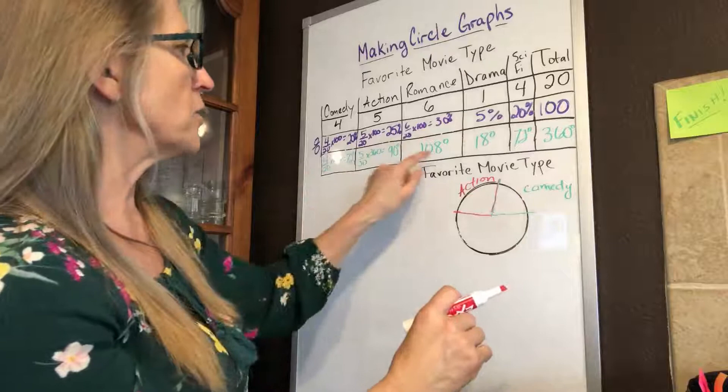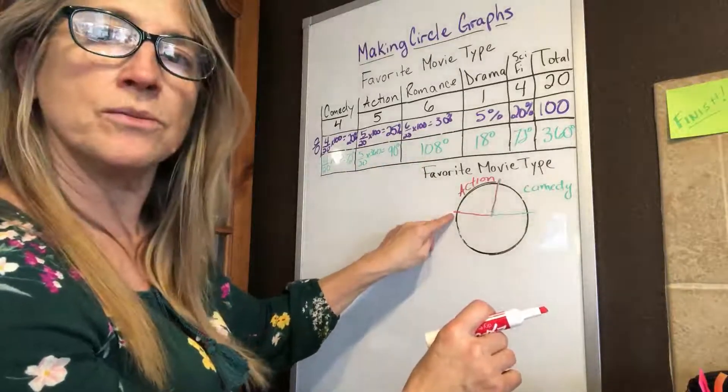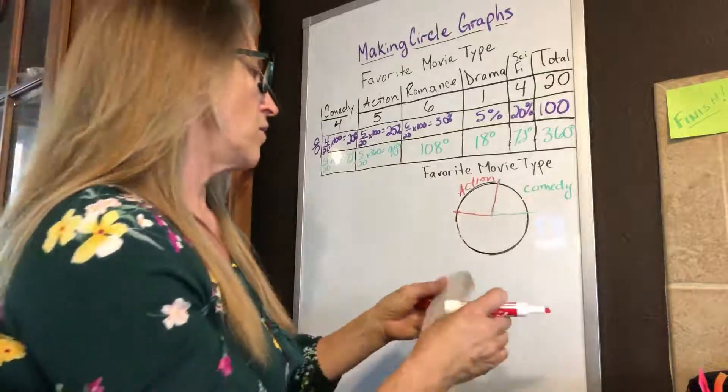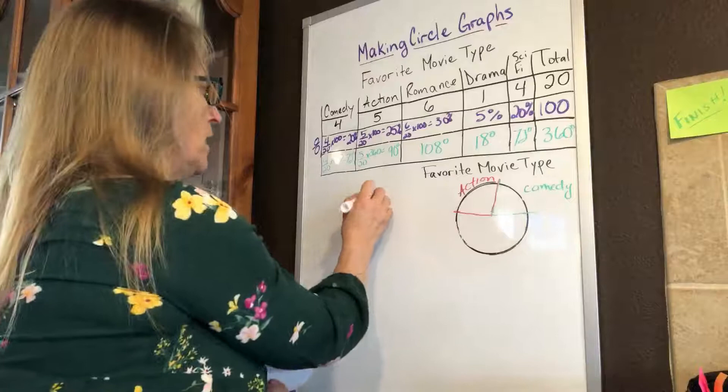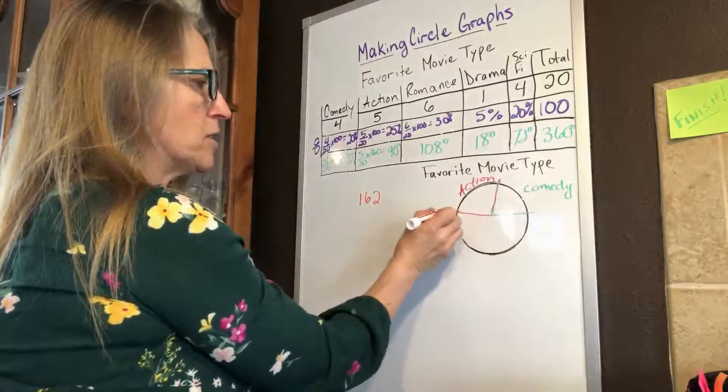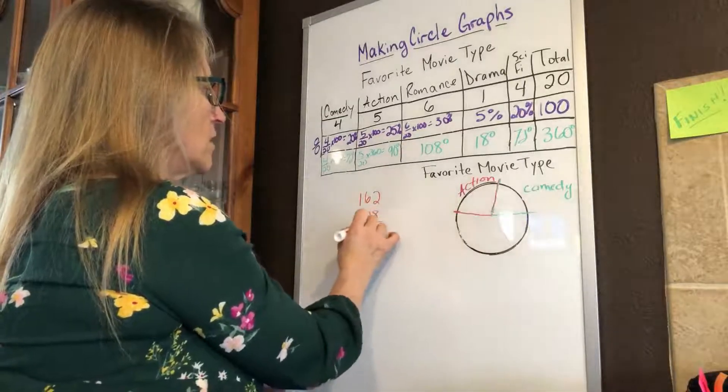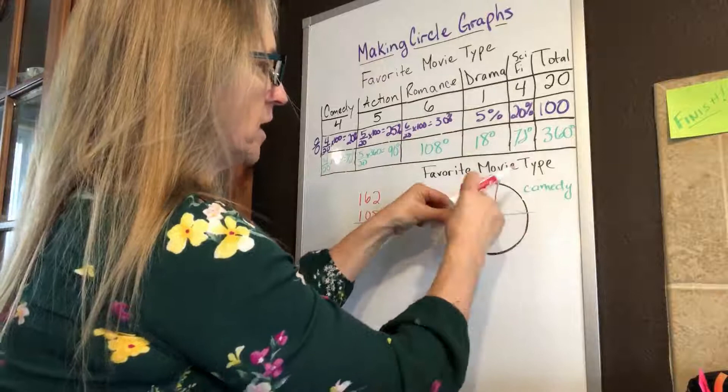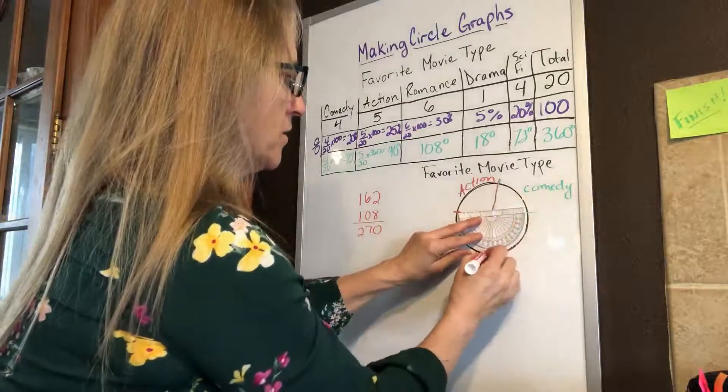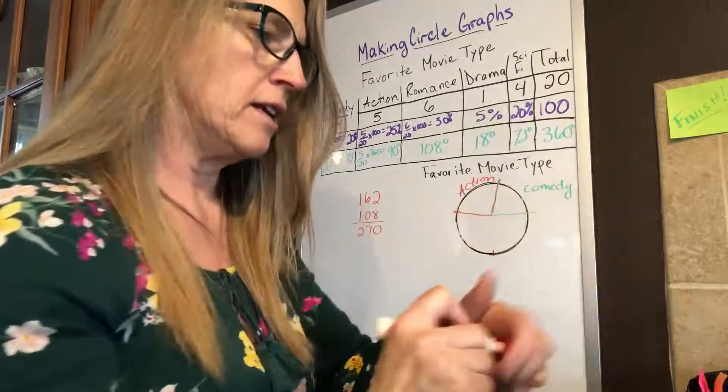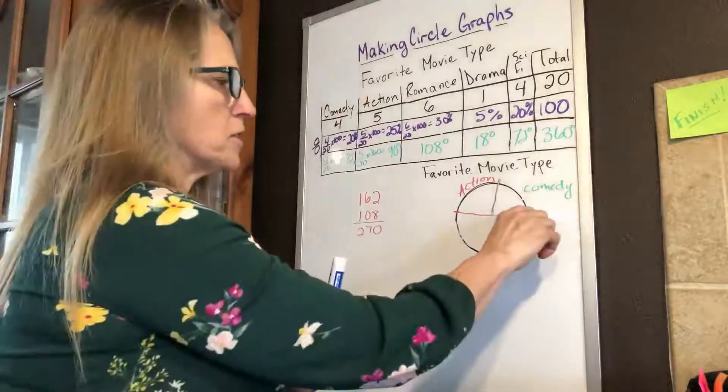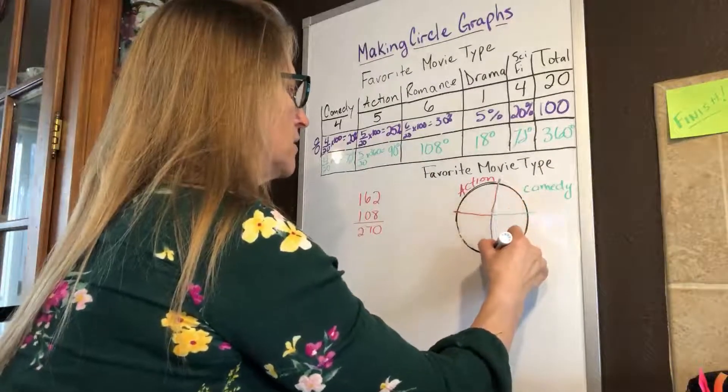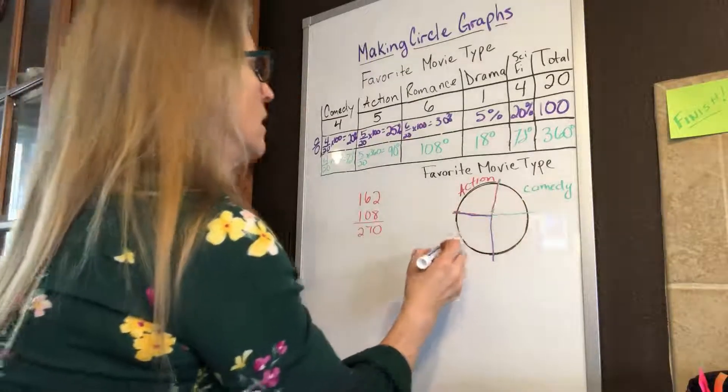My romance is going to be the 108 degrees. So from 162, I'm going to add 108, and that's going to be my romance section. 162 is where this is, that's how many degrees that is. And I'm going to add 108 degrees to that. So I'm going to get 270 degrees. That's going to be straight down here. When I think about 270 degrees, if I start here at zero, that means I'm going three quarters of the way around my circle. So this right here is going to be our romance.